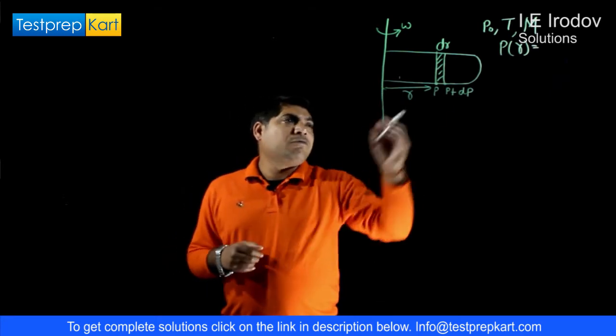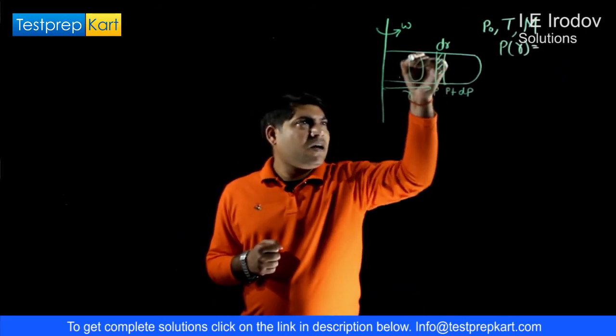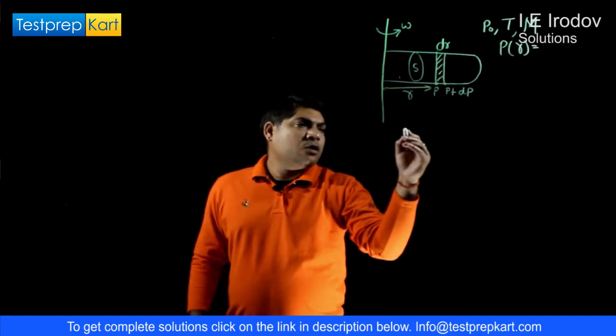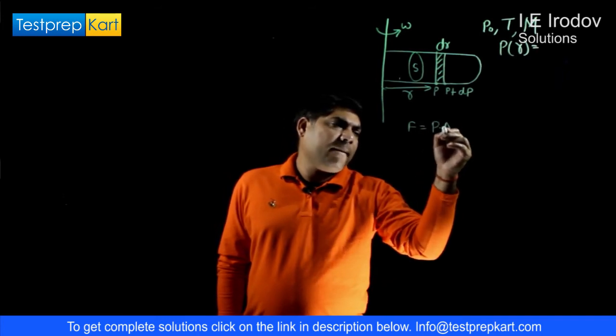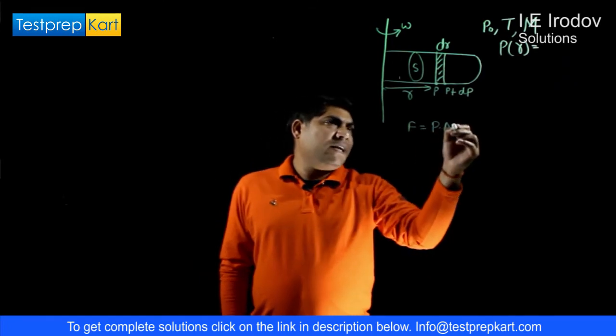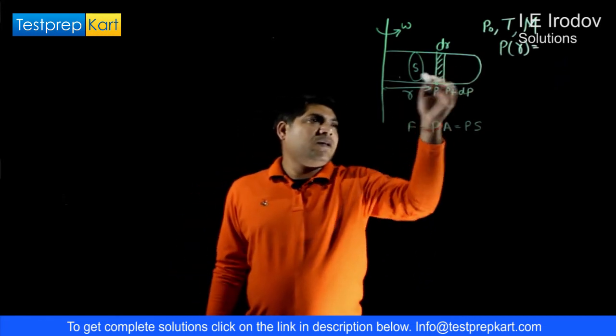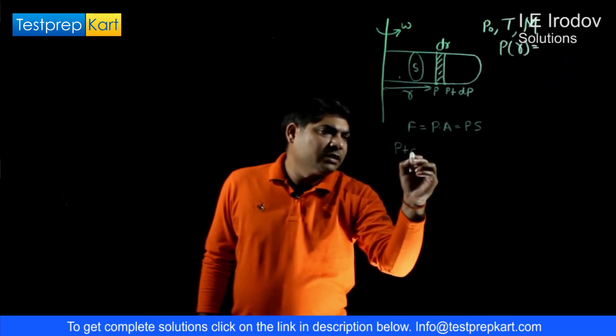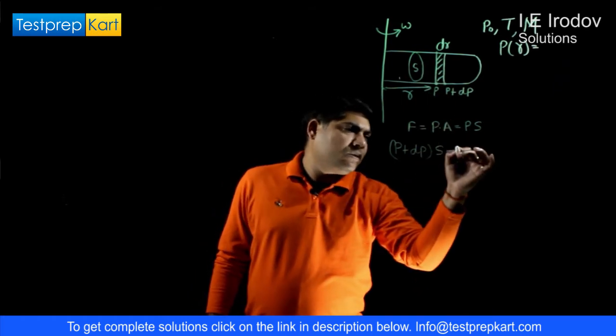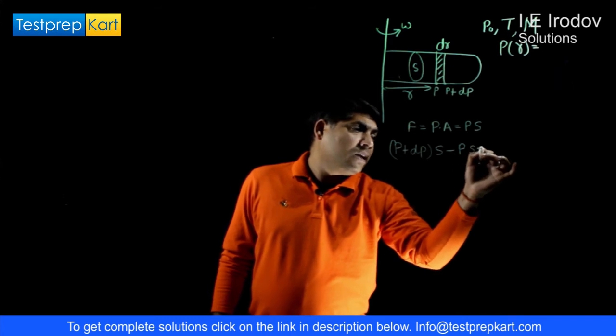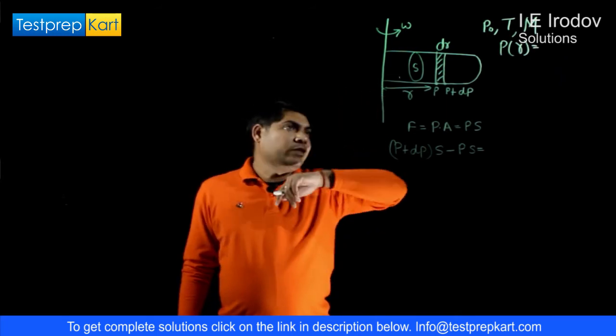What would be the force working on this segment? If we assume that the cross-sectional area of this cylinder is S, then force is equal to pressure into area, P into S. The force working on this segment is P plus dP into S minus the force at this phase, P into S, and it must be equal to centrifugal force working on it due to rotation.